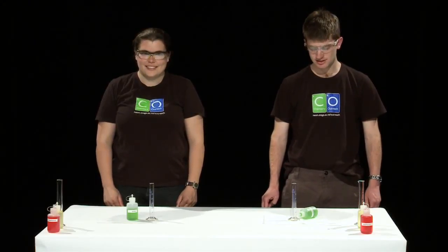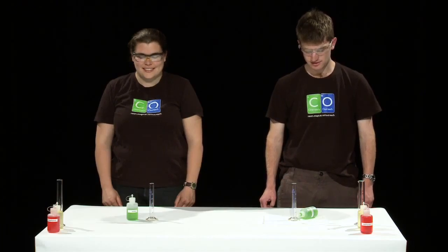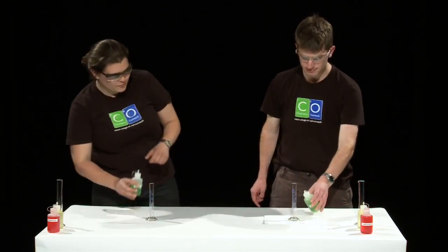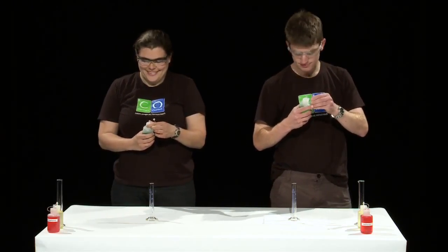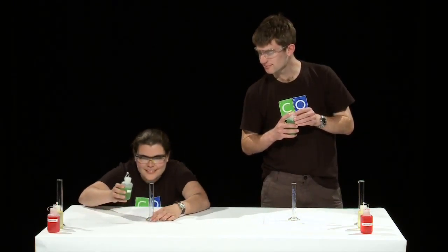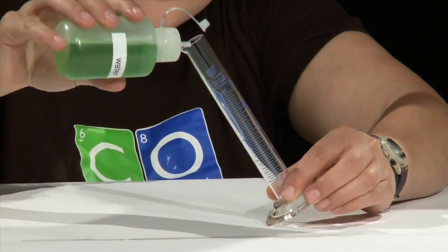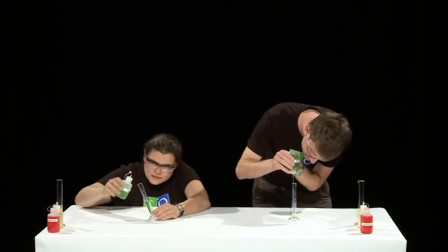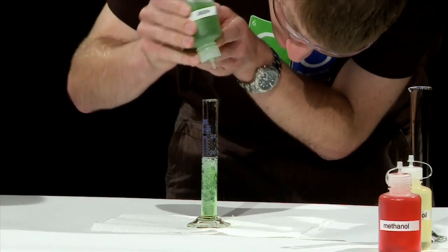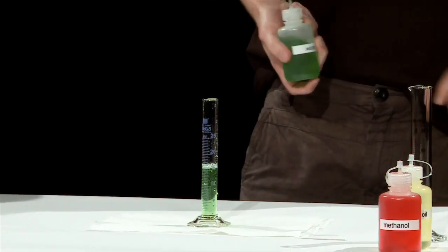To begin the experiment, accurately measure out 20 milliliters of water using a 25 milliliter measuring cylinder. Now it's a good idea to squirt the water down the side of the measuring cylinder. Squirting the water down the middle just ends up making bubbles. That makes it hard to measure out the volume accurately.